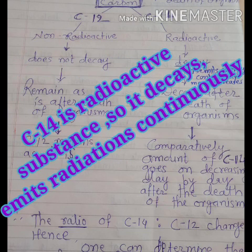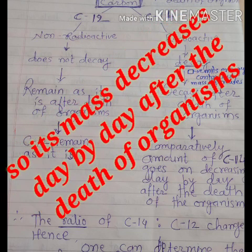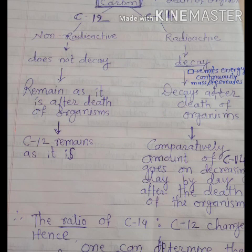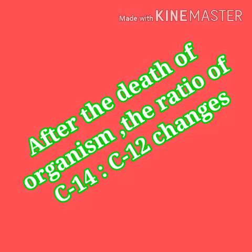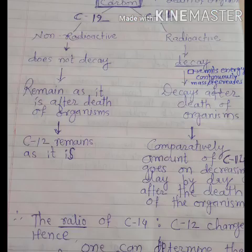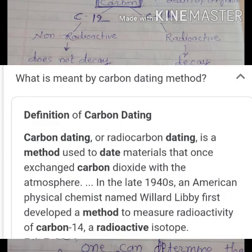As C14 is a radioactive substance, it decays and emits energy continuously. So its mass decreases day by day after the death of the organism. Comparatively, the amount of C14 goes on decreasing day by day. After the death of an organism, the ratio of C14 to C12 changes. Hence, one can determine the age of any fossil or organism, and scientists can conclude when it existed or died. The time passed since the death of a plant or animal can be calculated by measuring the radioactivity of C14 and the ratio of C14 to C12 present in their body. This is called the carbon dating method.